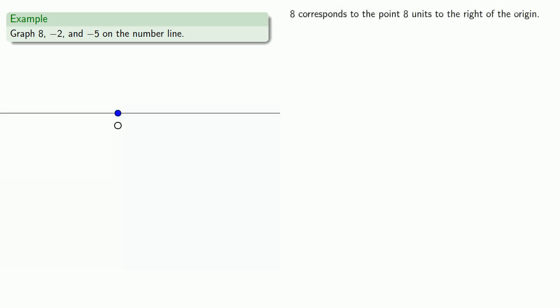So 8 corresponds to the point that's 8 units to the right of the origin. And so we might count out our spaces. 1, 2, 3, 4, 5, 6, 7, 8. And remember, if it's not written down, it didn't happen. So we'll label this point as 8.